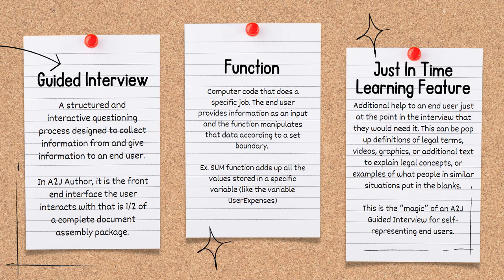A just-in-time learning feature is additional help to an end user just at the point in the interview that they would need it. This can be pop-up definitions of legal terms, videos, graphics, or additional text to explain legal concepts, or examples of what people in similar situations put in those blanks. This is the magic of an A2J guided interview for self-representing end users.